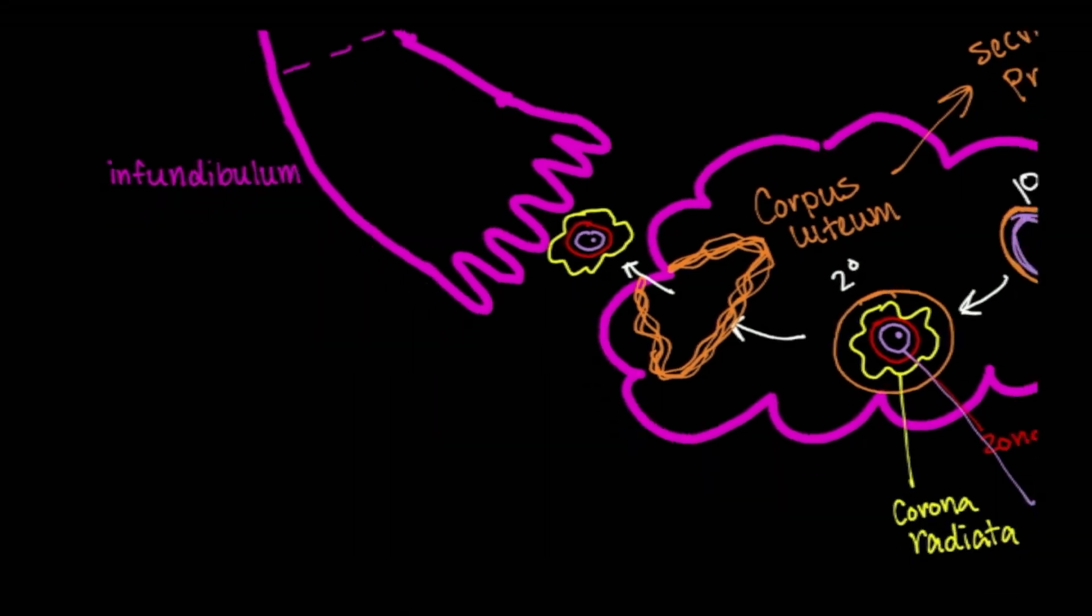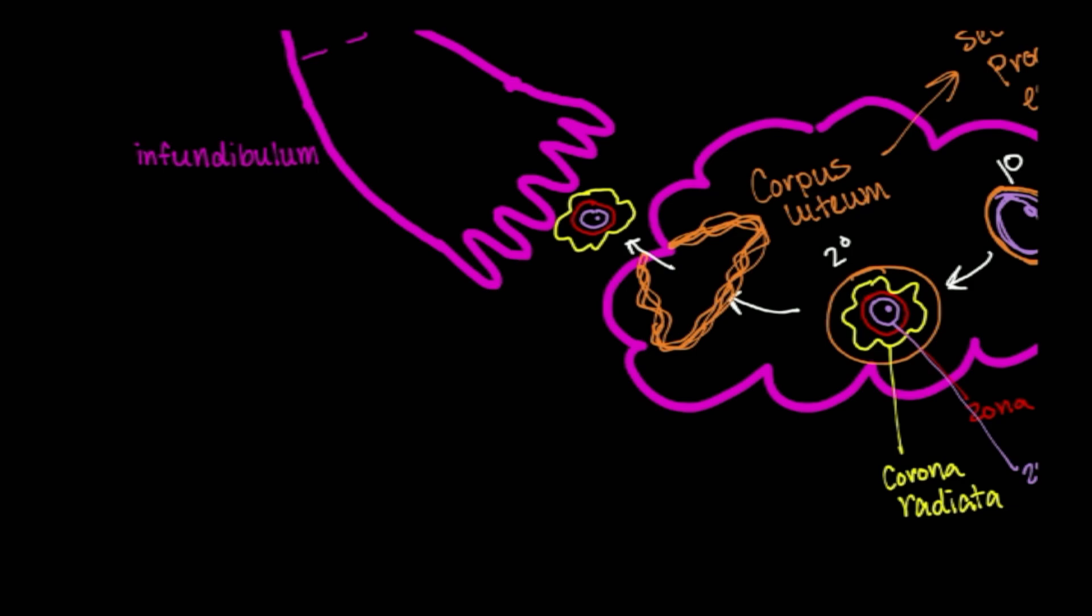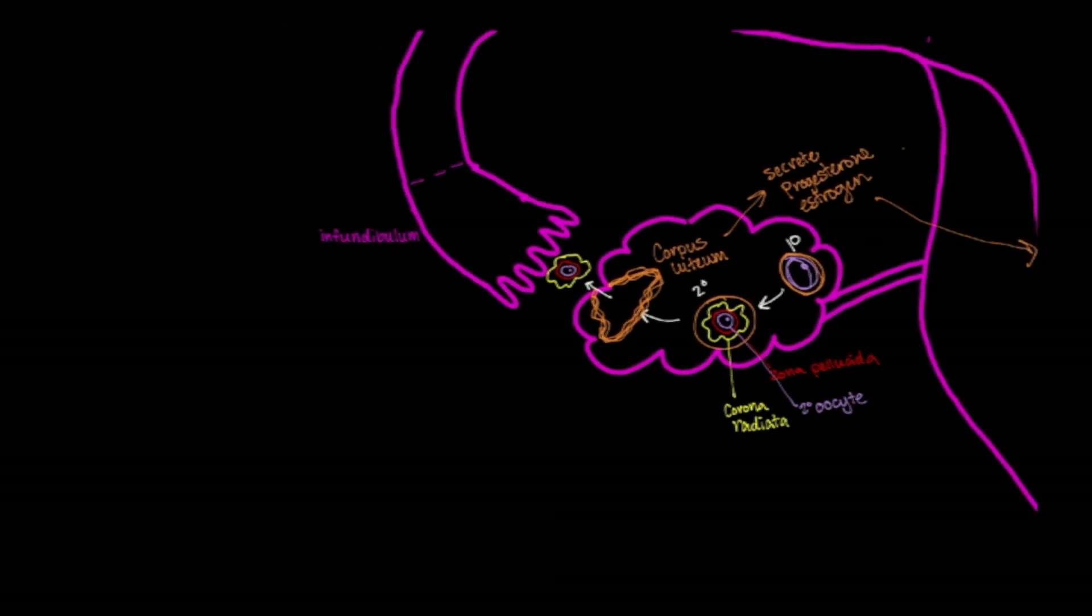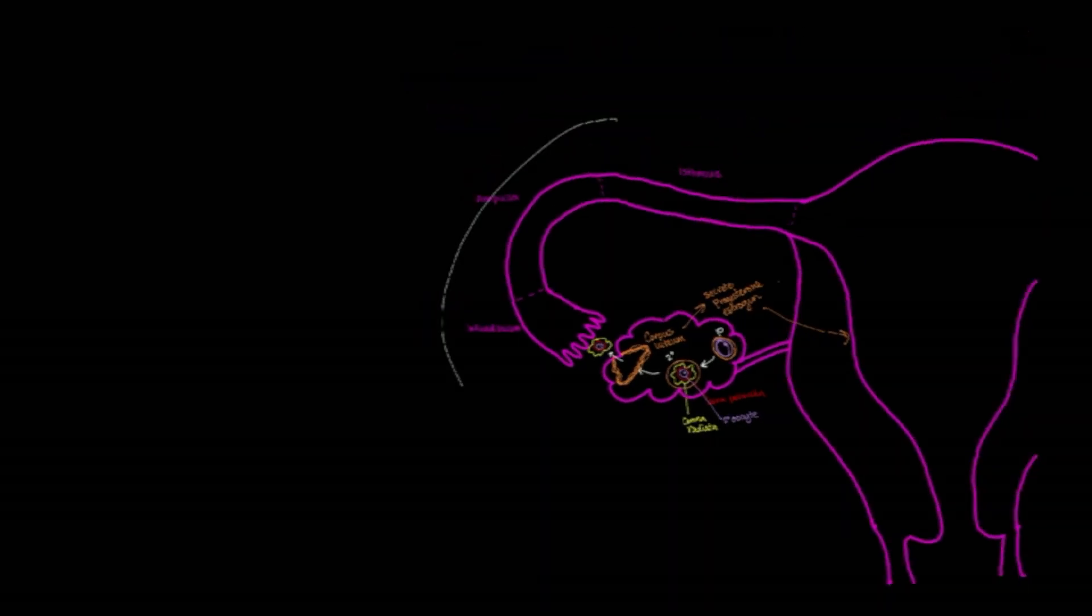So right now we have left off. Our egg is in the peritoneal cavity. The first structure that it will encounter are fimbriae located on the uterine tube. So it will be these finger-like projections coming off of the uterine tube. Here's that uterine tube. And that connects into the uterus, the uterine cavity itself.